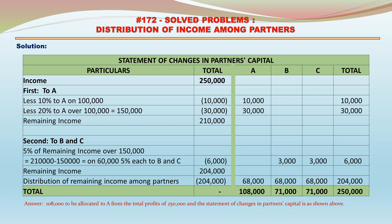Answer: 108,000 is to be allocated to A from the total profits of 250,000, and the statement of changes in partners' capital is as shown above.